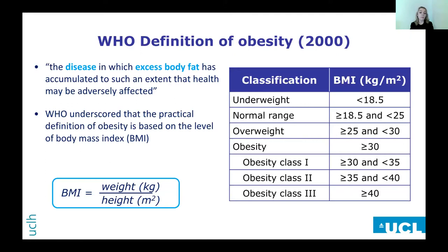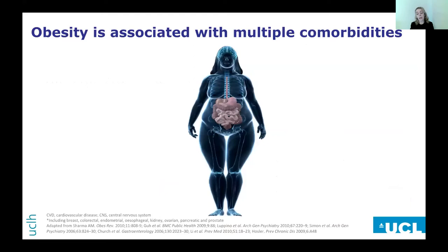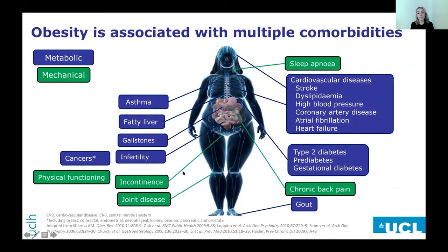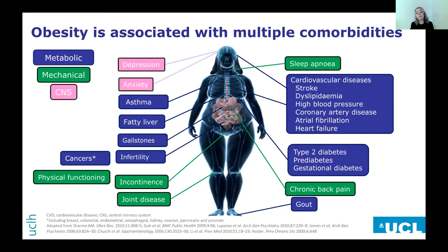Obesity impacts upon every organ system in the body. In particular, it's the metabolic effects of obesity that drive ill health — for example, type 2 diabetes, cardiovascular disease, fatty liver, infertility, and cancers. There's also the mechanical effect of carrying around excess adipose tissue, which impacts on the joints, contributes to sleep apnea, and impairs physical functioning. And we mustn't forget the CNS effects: people with obesity have an increased prevalence of depression and anxiety.